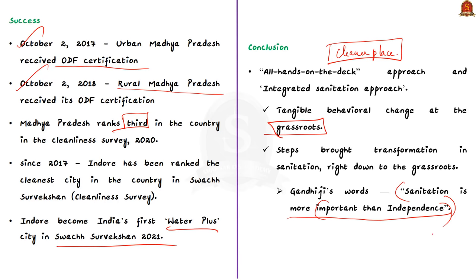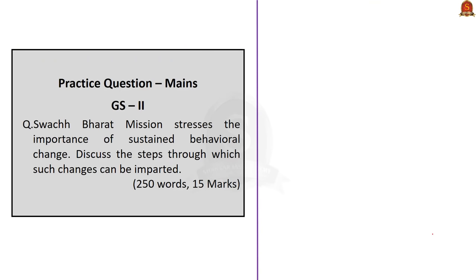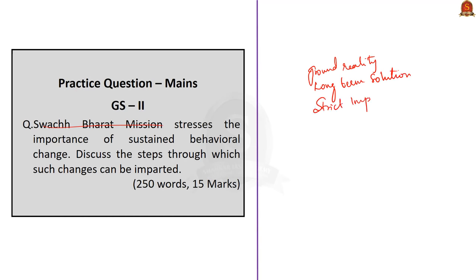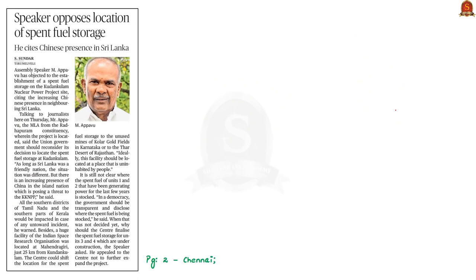In summary, the key takeaways from this Swachh Bharat Abhiyan discussion are: knowing ground realities is very important; long-term solutions for behavioural change are a key component; strict implementation of regulatory steps and good leadership have made Madhya Pradesh a cleaner place.